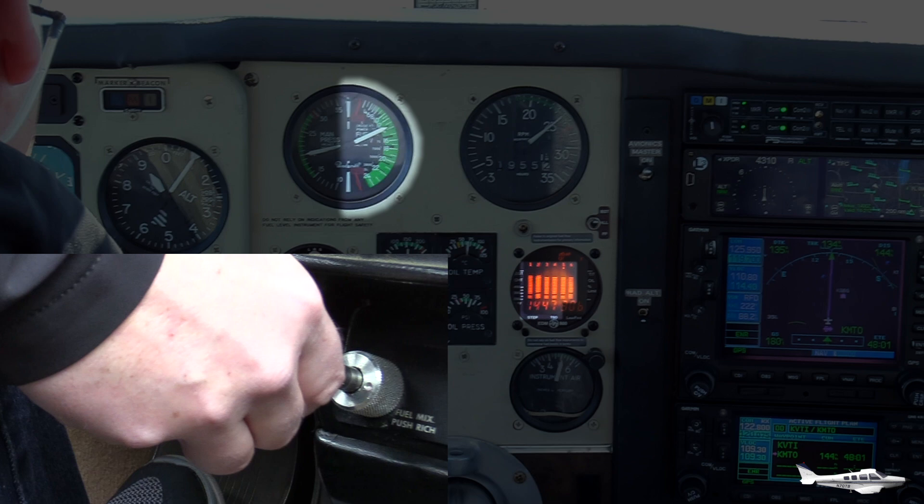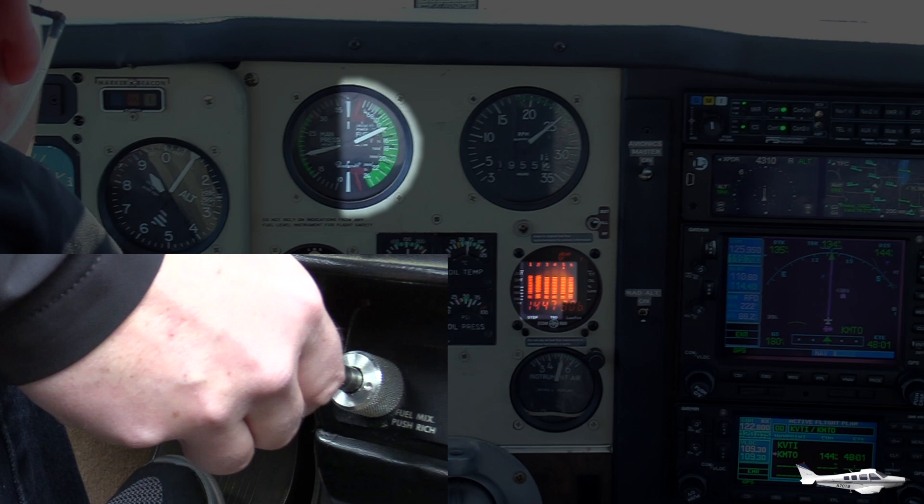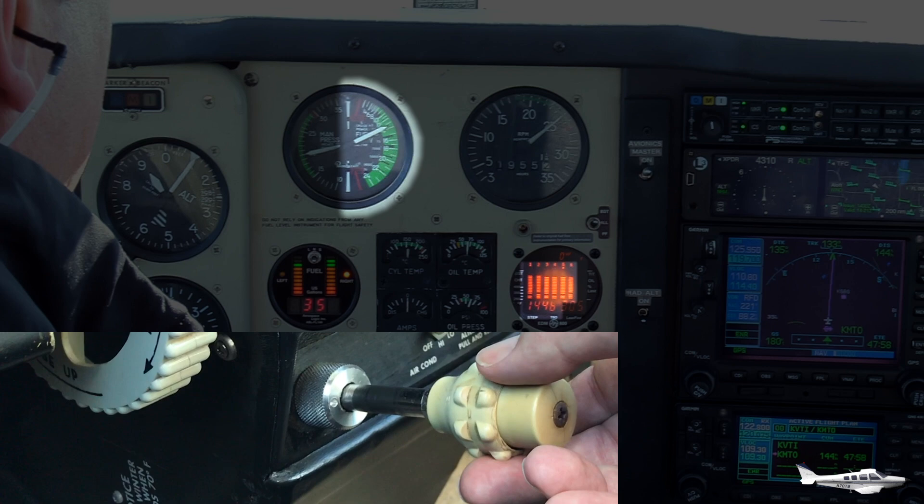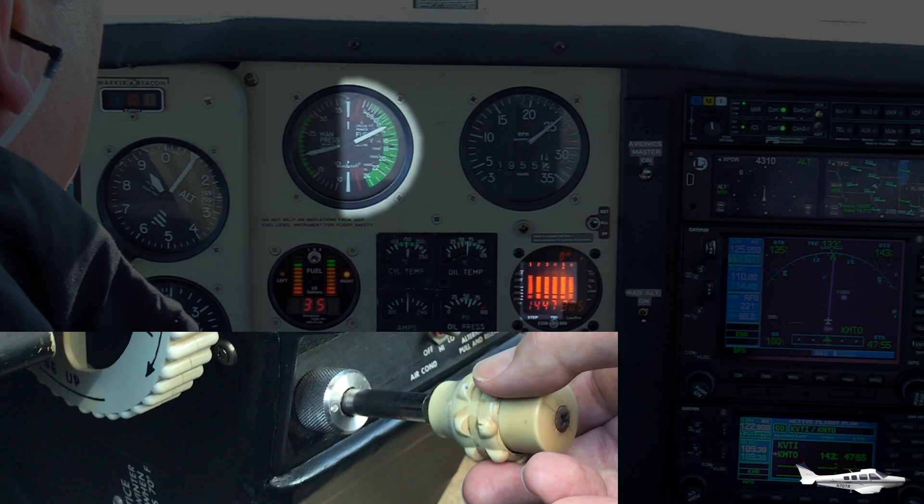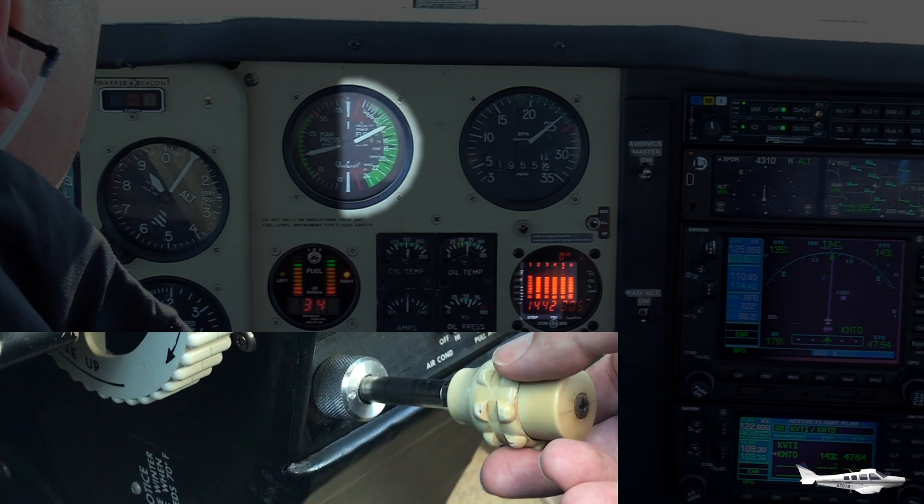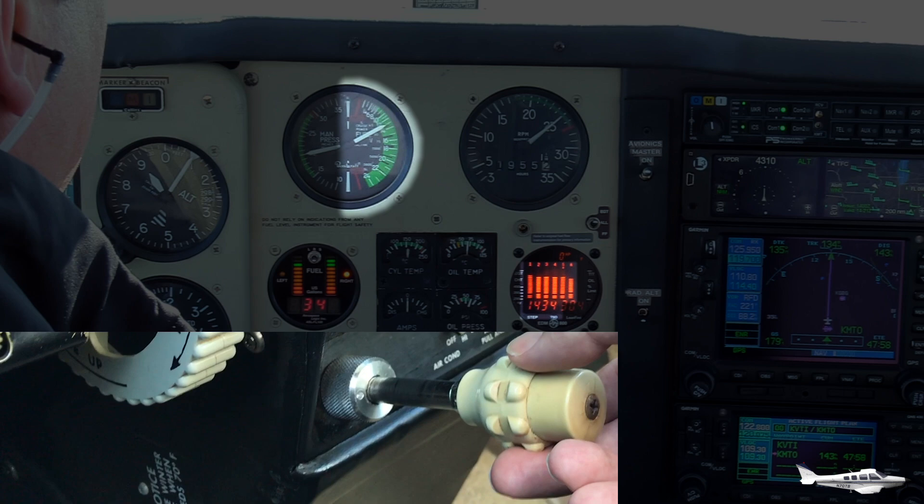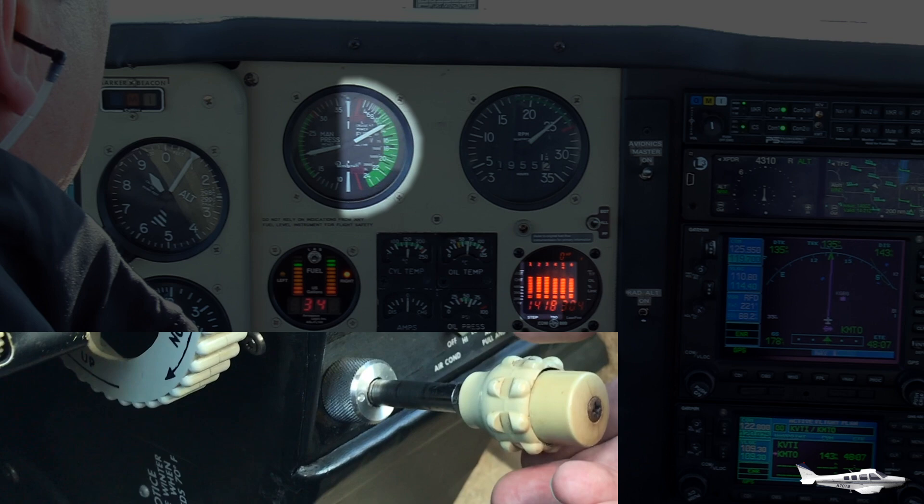And now, watch this. I keep reducing the fuel flow with the mixture knob, but the exhaust gas temperature is reaching a maximum, reaching a peak EGT here at 1445 degrees, and is now actually reversing to lower values. And that reversal tells us we're now on the lean side of peak. The EGT is still going down further, and I'm going to try to lean the mixture to a point where we get an EGT of about 1420, so about 25 degrees below the peak we saw earlier.